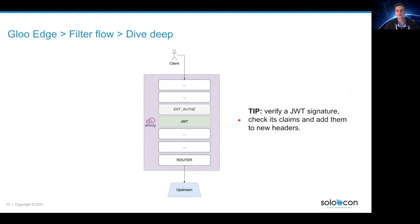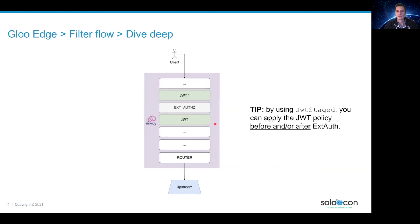Now the JWT filter. Basically you can verify your JWT signature and check its claims and also add them to new headers. You can also apply this JWT filter before the ExtAuth filter.